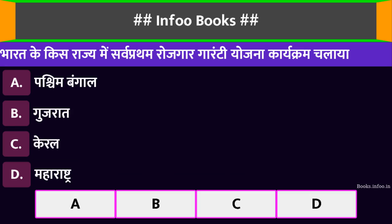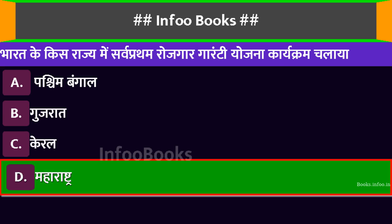भारत के किस राज्य में सर्वप्रथम रोजगार गारंटी योजना कार्यक्रम चलाया? Option A: पश्चिम बंगाल। Option B: गुजरात। Option C: केरल। Option D: महाराष्ट्र। सही विकल्प है: महाराष्ट्र।